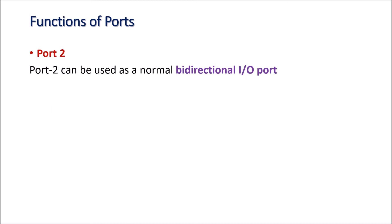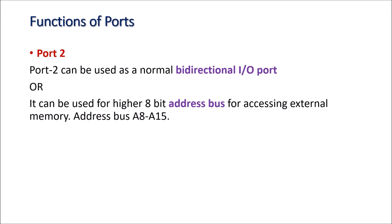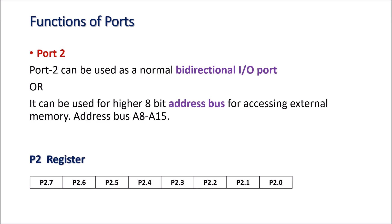Port 2 can be used as a normal bidirectional I/O port, or it can be used as the higher 8-bit address bus for interfacing external memory, named A8 to A15. P2 is the register associated with port 2. Individual bits can be accessed and are written as P2.0, P2.1, P2.2, up to P2.7. Eight bits can also be read or written at a time.